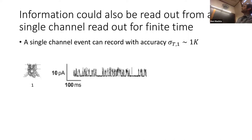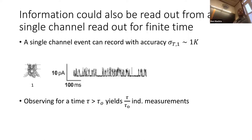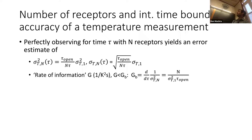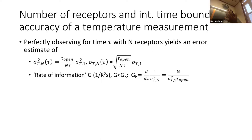If a single channel can detect temperature with an accuracy of one degree Kelvin, averaging N channels together lets you do better. If they're independent, the variance decreases by a factor of N, and the uncertainty of a single measurement goes down by root-N. With something like a million channels, you'd be able to accurately measure a millikelvin change. But the information needs to be read out: measuring the state of every channel independently would work in principle. This places an absolute bound — a Fisher information rate G with units of inverse-Kelvin-squared-seconds — on any strategy.